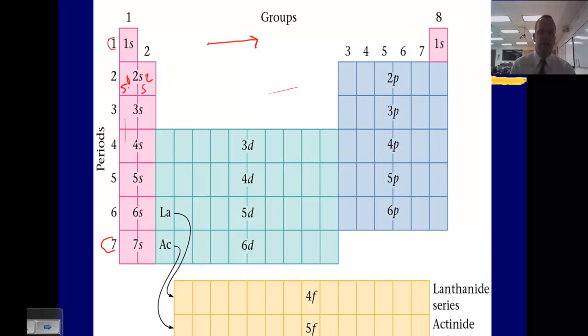This is where we start to get the overlaps. There are certain orbitals that are lower energy even though they're in a higher energy level. 4s is at a lower energy than 3d, just slightly, so it actually comes before 3d.